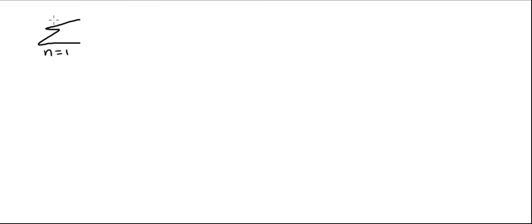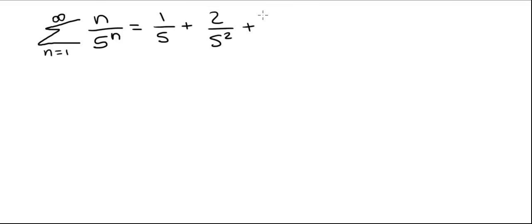We're going to find the sum of the series from 1 to infinity of n divided by 5 to the n. If we expand this, it is 1 divided by 5 plus 2 divided by 5 squared plus 3 divided by 5 cubed plus 4 divided by 5 to the 4th and so on. Note this is not a geometric series, so we can't use any of the formulas we learned about when we studied geometric series.